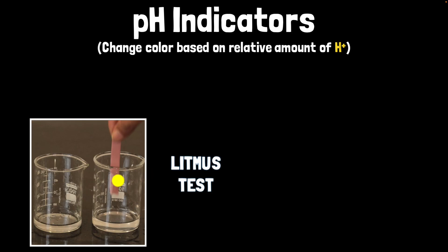These compounds change color based on the H plus concentration, but they're very simple. So the color is either red or blue. Red for acidic, blue for basic.